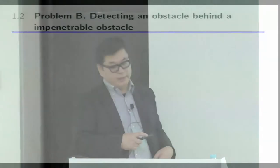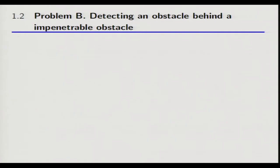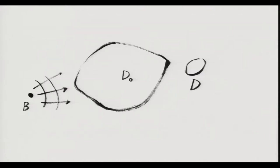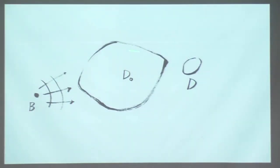Problem B: detecting an obstacle behind an impenetrable obstacle. We develop a mathematical method of imaging an unknown obstacle behind a non-impenetrable obstacle, from a single wave generated and observed at the same place, where one cannot see the unknown obstacle by using visible light. We produce a wave, which will propagate behind and produce some reflective catch. In this setting, the obstacle causing the occlusion is called the known obstacle, and behind it lies the unknown obstacle we wish to detect.